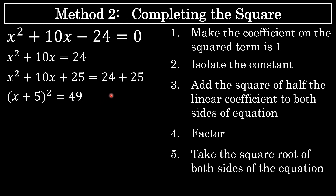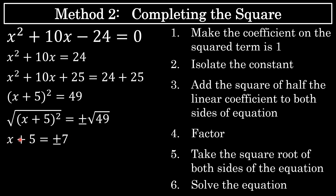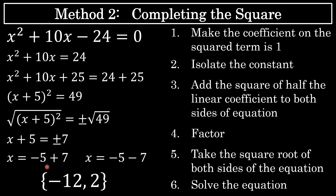On to step 5: take the square root of both sides of the equation. When you introduce a square root, don't forget to include a plus or minus in front of the square root of the constant, which in this case is 49. The square root of x plus 5 squared is just x plus 5, since square root and squaring are inverse operations. The square root of 49 is 7, so x plus 5 equals plus or minus 7. Subtracting 5 from both sides gives x equals negative 5 plus or minus 7, meaning x equals negative 5 plus 7 or negative 5 minus 7.